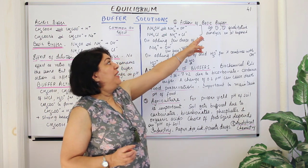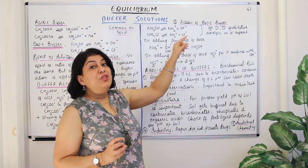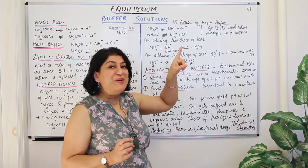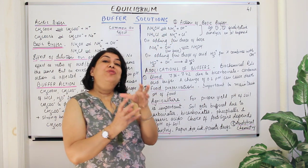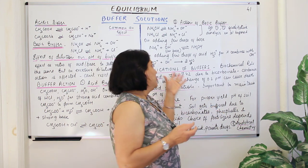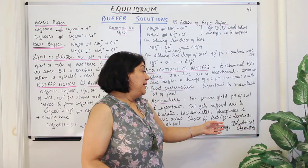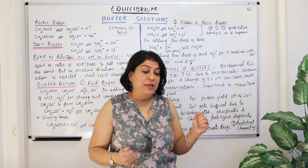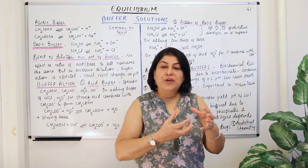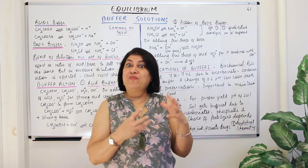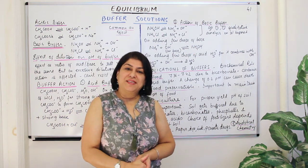One example is the qualitative analysis of group 3 and 4 cations, where the solution must be buffered. You add ammonium hydroxide and ammonium chloride to create a buffer in order to get your precipitates. Buffers are also used in analytical chemistry to remove interfering radicals — for example, in the case of phosphates, buffers are used to remove those interfering radicals.